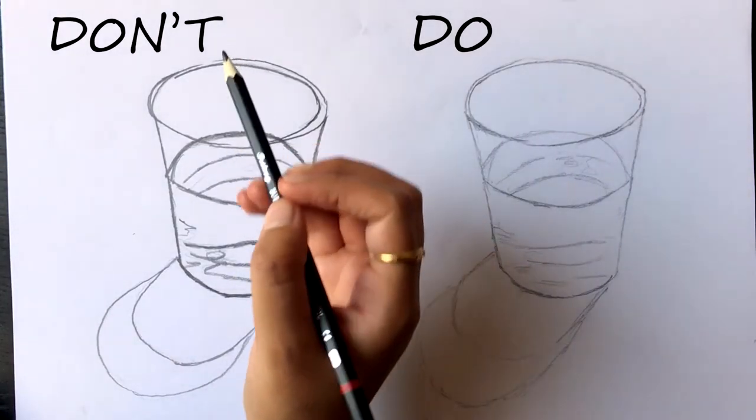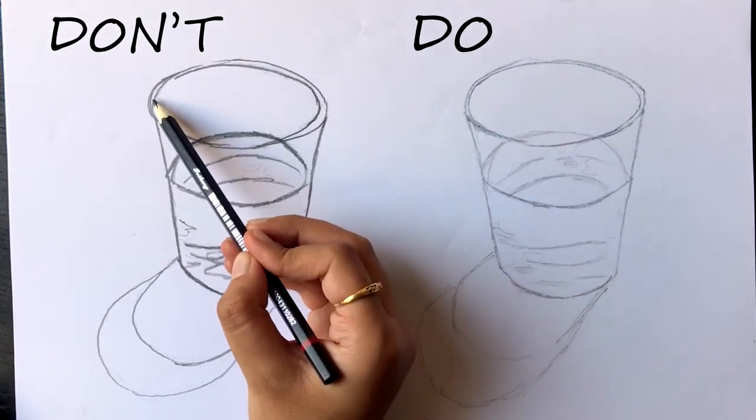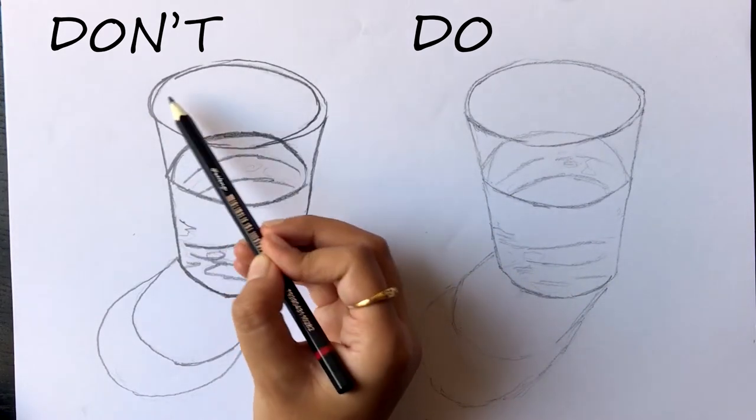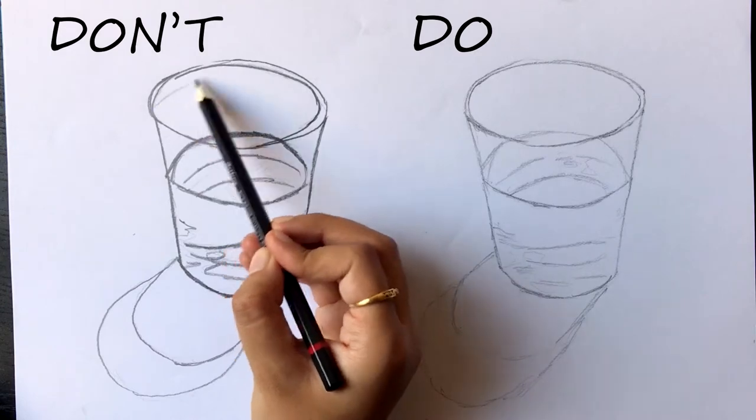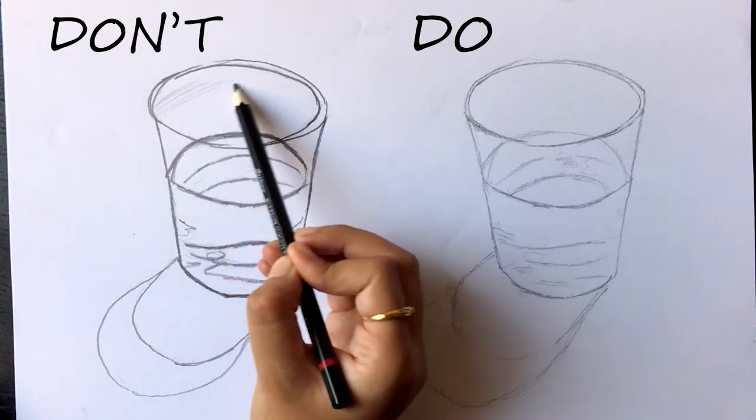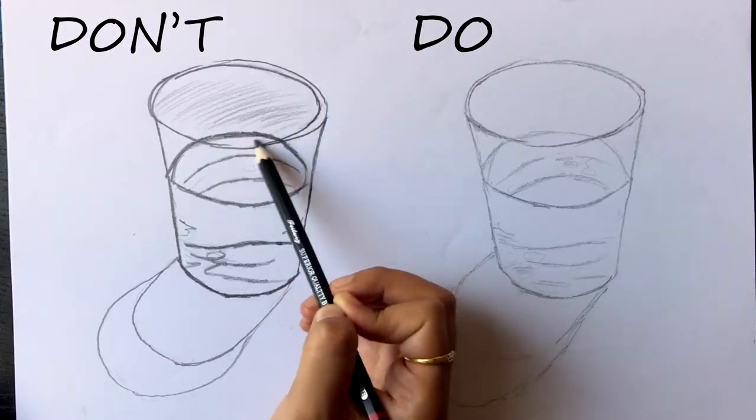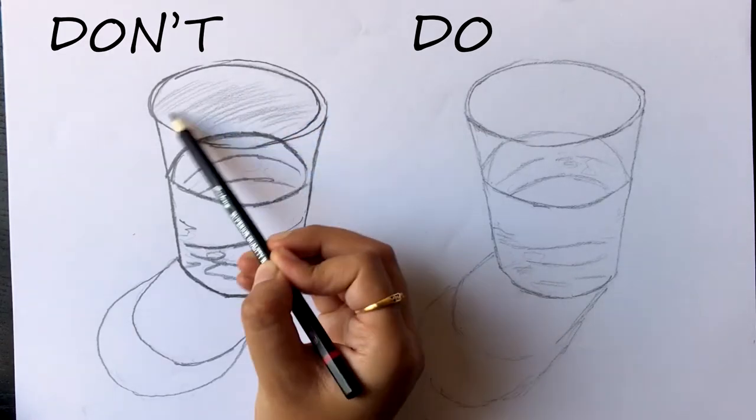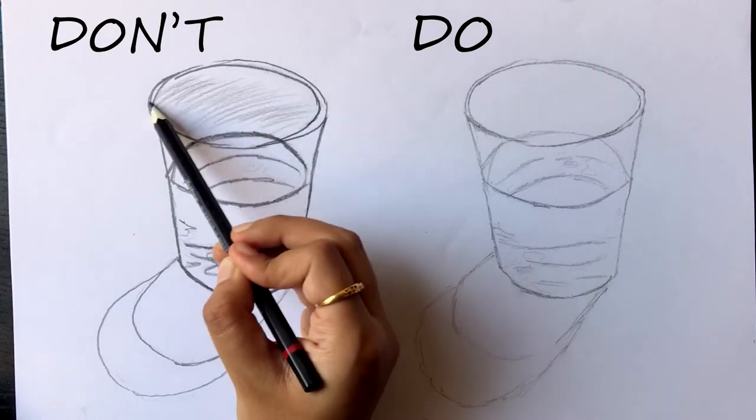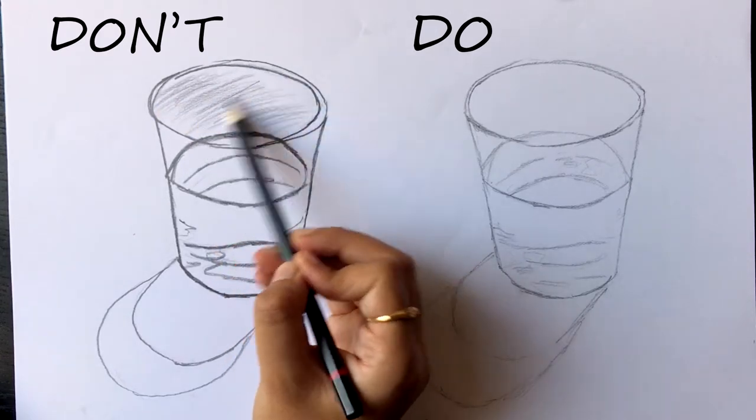When shading, there are a couple of things to keep in mind. First, avoid huge gaps between each stroke. Second, do not apply uneven pressure. This will result in different shades of strokes, making some darker and some lighter. Also, it will make it very difficult to blend. The third thing is to not shade in random directions.